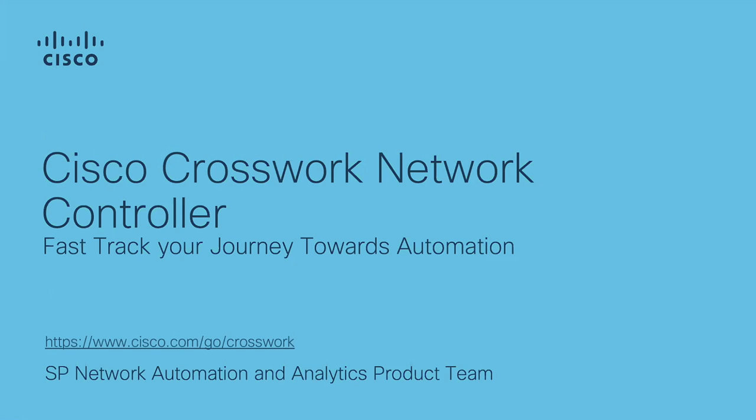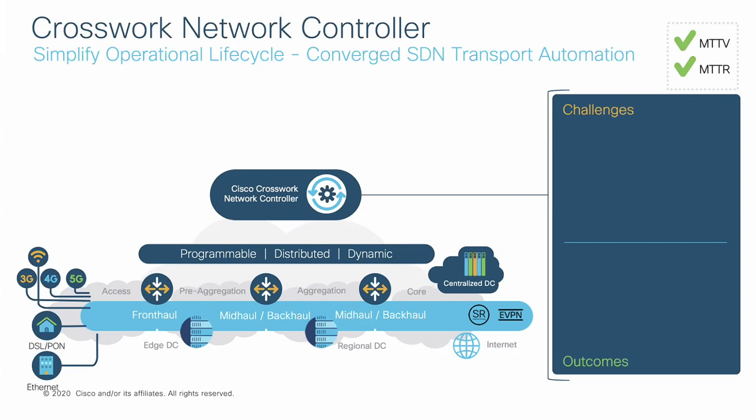In order to introduce the controller — or what I call CNC in short — a good way to do that is to talk about some of the use cases and challenges that the controller is trying to address. As you can see on this slide, there's a simplified view of the network. On the left side is the access connecting to the end customers or sites, going all the way to the right connecting to the centralized data center. One of the challenges customers face today is the provisioning of services.